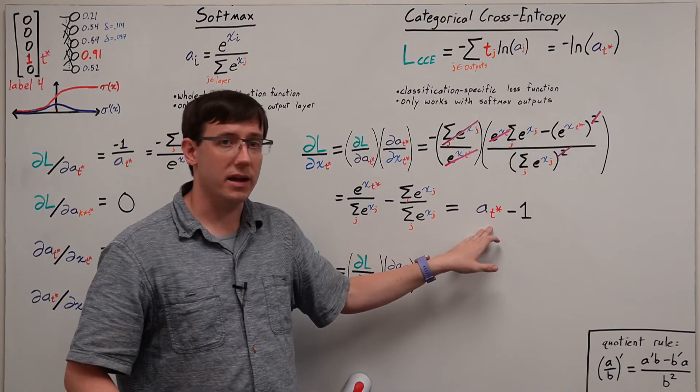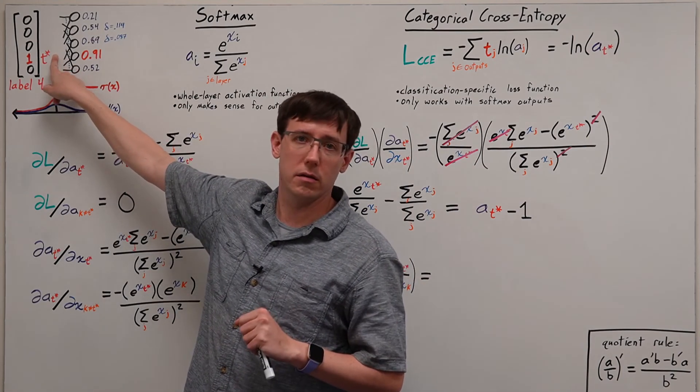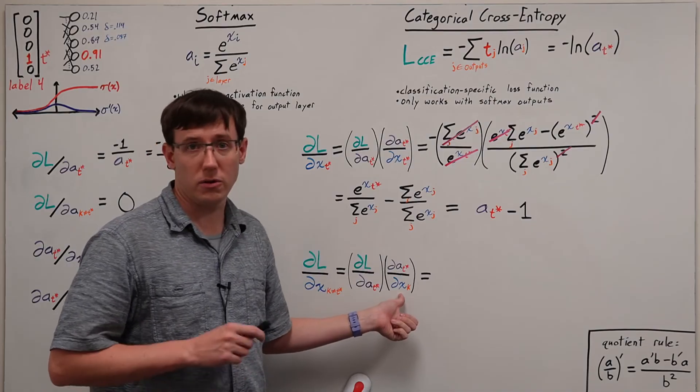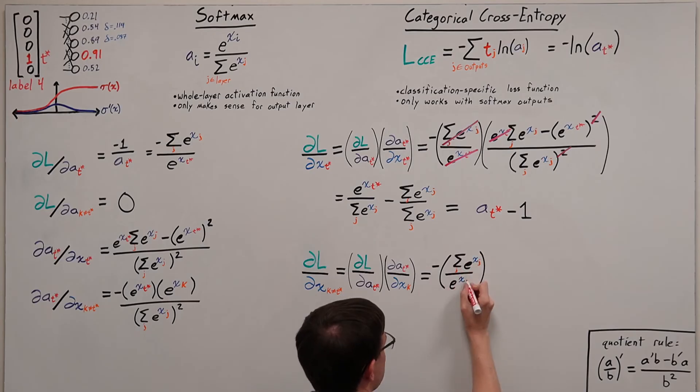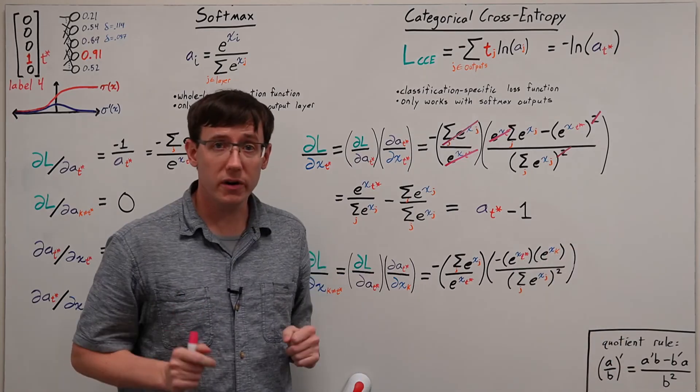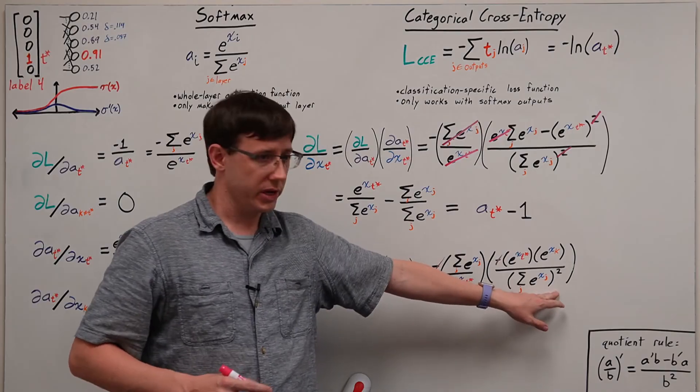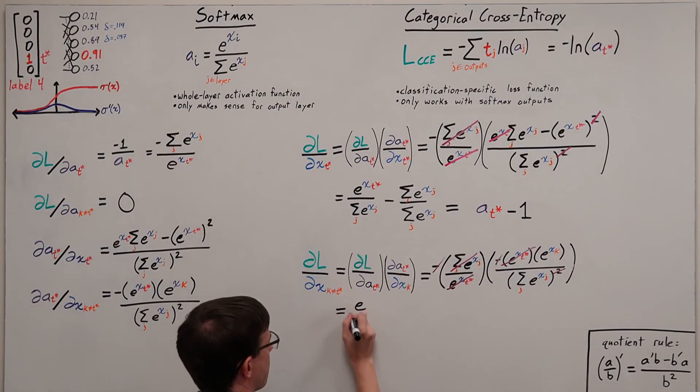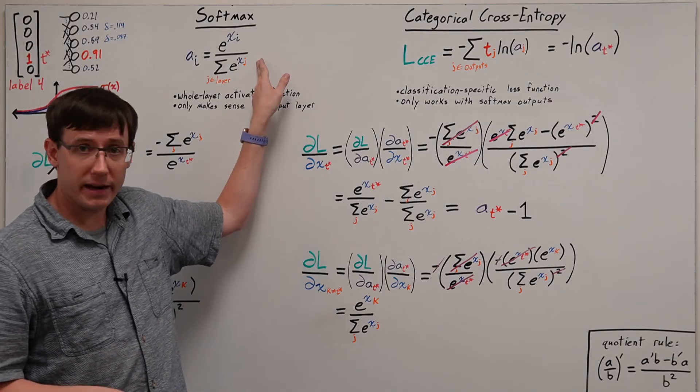And so, as long as we have already computed and saved this activation on the forward pass, the delta for this node is incredibly easy to calculate. And it turns out that we'll get lots of the same simplifications when we work out the partial derivatives for the other neurons. We'll start by copying over these terms that we calculated before. When we start cancelling terms here, we first lose both of the minus signs, and our sum in the numerator can cancel with one from the denominator. And our e to the xt star terms can also cancel. And what we're left with is exactly the formula for the activation of node k.